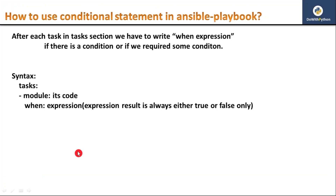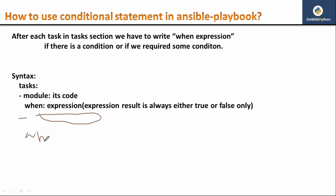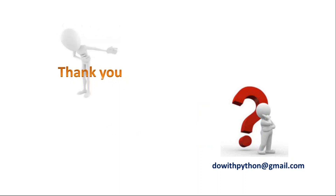That is the way how to use conditional statements in your Ansible playbook. We won't use 'when: true' or 'when: false' directly — you have to write some expression, and based on that expression your task will execute. If you require more 'when' conditions, for each task you can include a when section. We write it only when there is a condition — not unnecessarily. Thank you for watching this video, do subscribe to my channel to get notifications whenever new videos are posted.